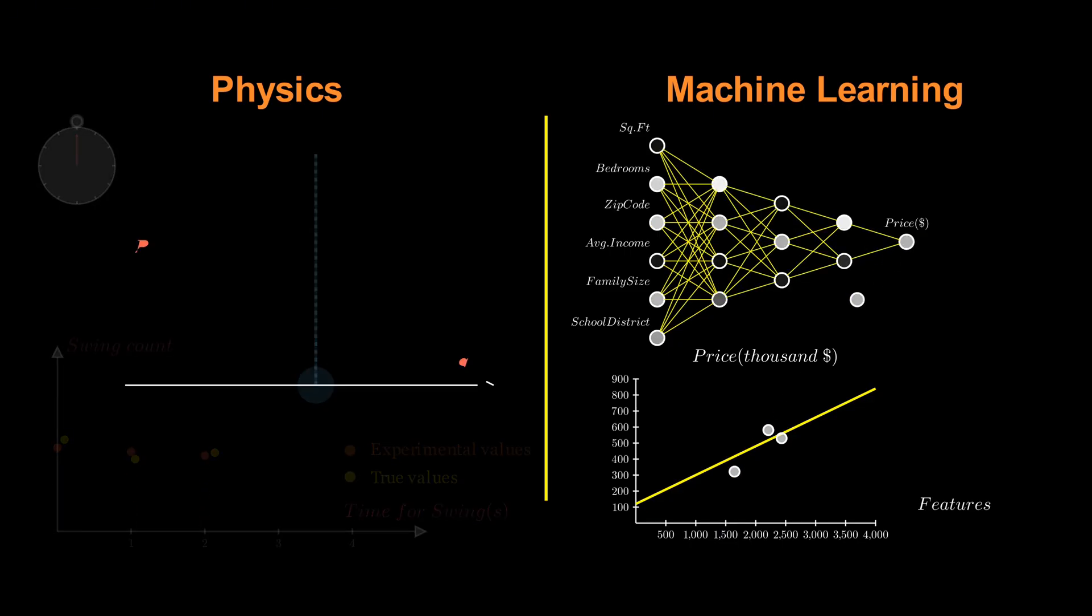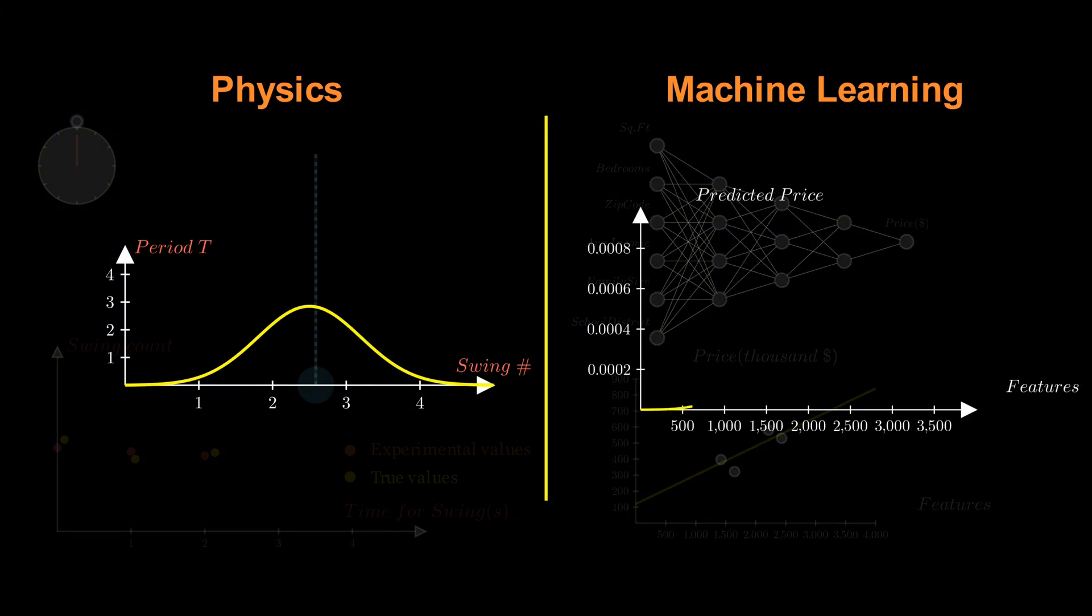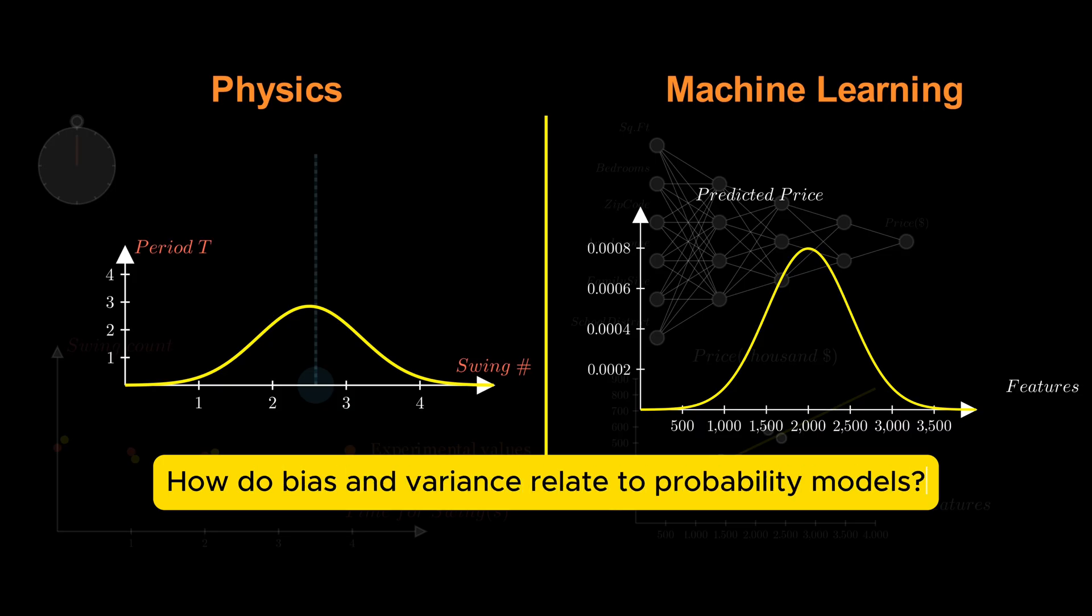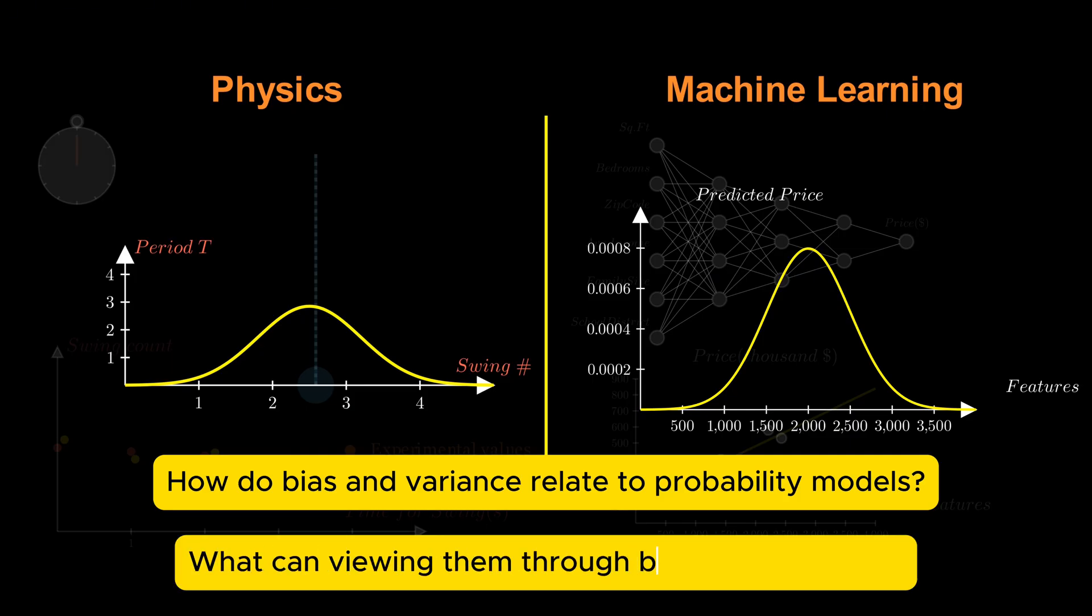We also know that, just like in physics, most machine learning models are probabilistic. But here's the real question. How exactly are concepts like bias and variance related to the probability models that both physicists and data scientists rely on? And what can we learn by seeing them through both lenses? Stay tuned.